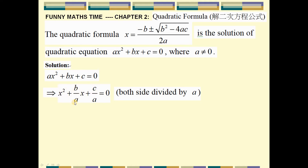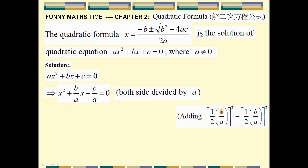For the next step we need to add one more term. We add zero to this expression so that we can make a completing square. For this, the key term is equal to b over a times 1 over 2, which means b over 2a, all squared.